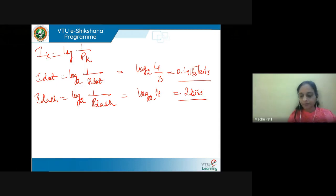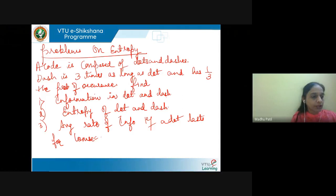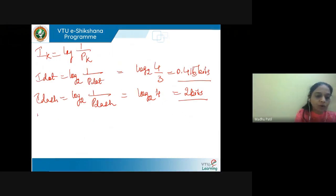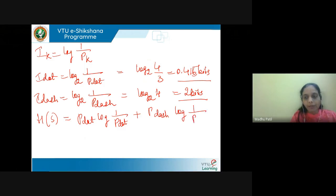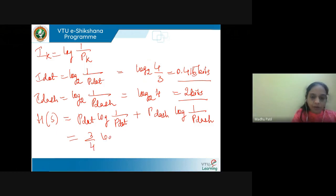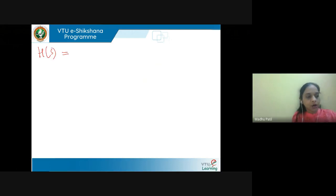Next, I have to find the entropy of dot and dash. Entropy H(S) is given by the sum of p_k log(1/p_k). So H(S) = p_dot log(1/p_dot) + p_dash log(1/p_dash) = (3/4) log(4/3) + (1/4) log(4). This gives entropy H(S) = 0.8113 bits per symbol.